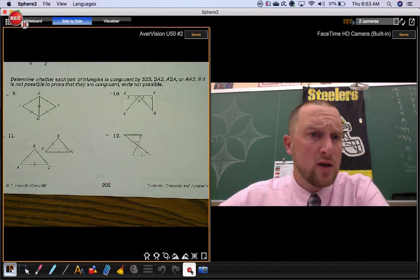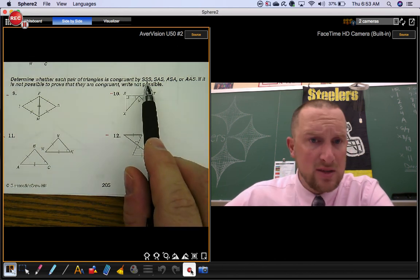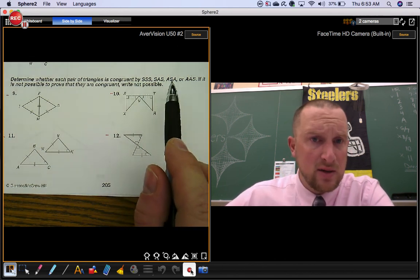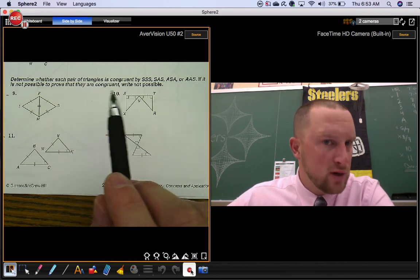Okay, last section. Determine whether each pair of triangles is congruent. We have shortcuts like side side side, side angle side, angle side angle, and angle angle side. If it's not possible to prove they're congruent, write not possible.